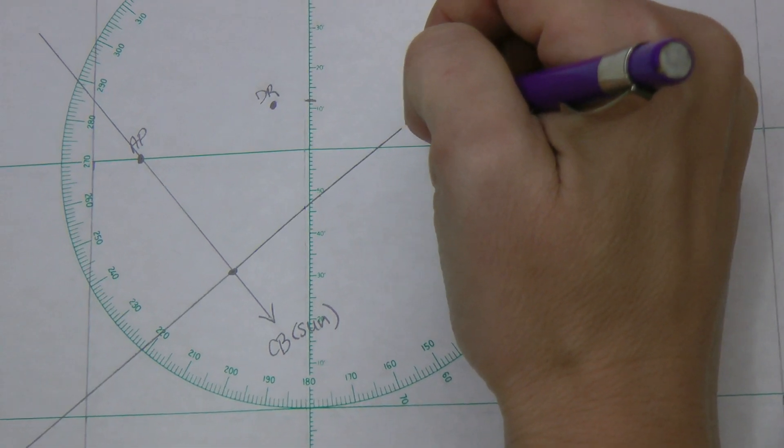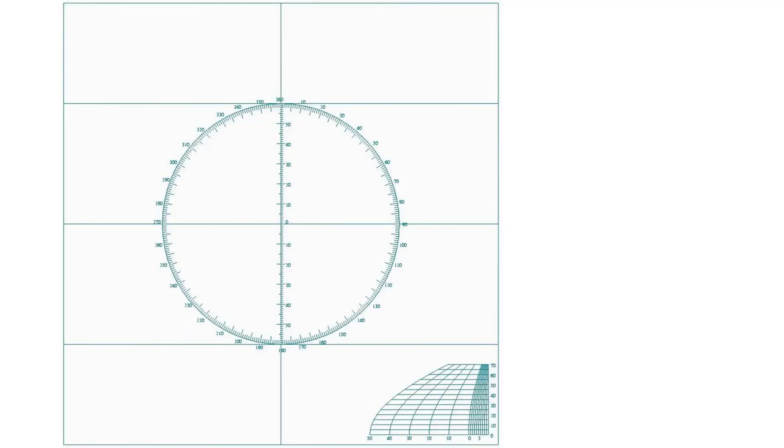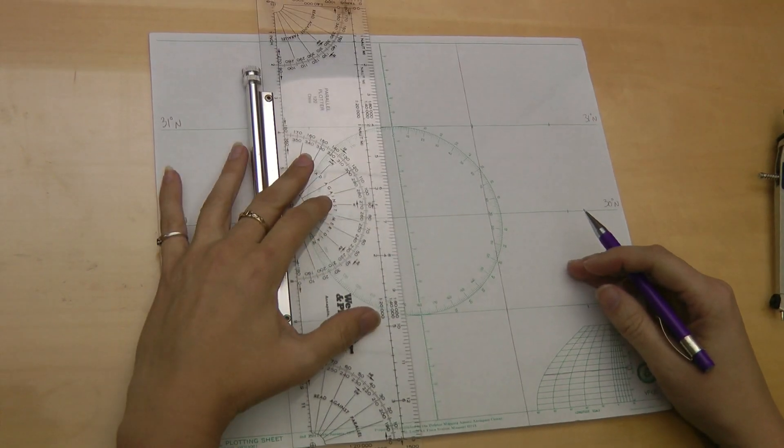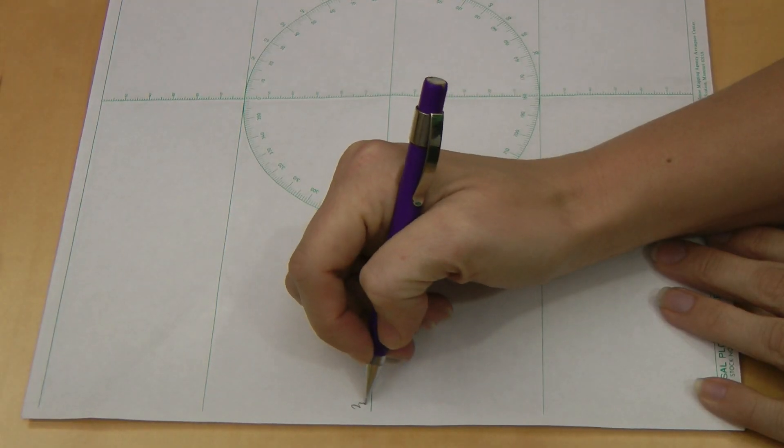To chart a line of position, you'll need the following materials: a blank position plotting sheet, a parallel plotter, a compass also known as a divider, and a pencil.